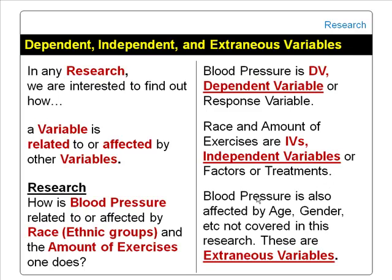We also know that blood pressure is affected by age, gender, diet, and so on, but these are not covered in the study. These are the extraneous variables. We need to control these extraneous variables so that any differences in blood pressure are solely related to race or due to the amount of exercises, and not caused by the extraneous variables.